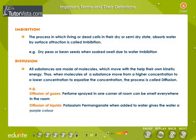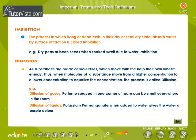Important Terms and Their Definitions. Imbibition: The process in which living or dead cells, in their dry or semi-dry state, absorb water by surface attraction is called imbibition. For example, dry peas or bean seeds, when soaked, swell due to water imbibition.